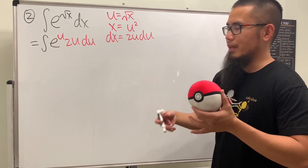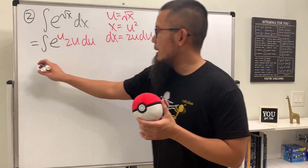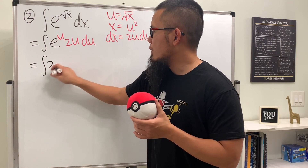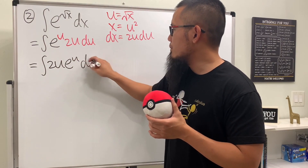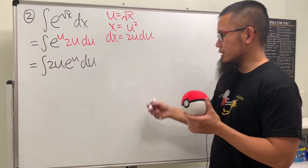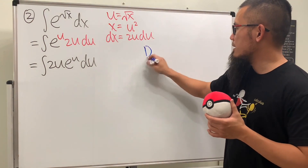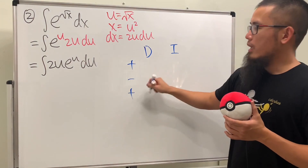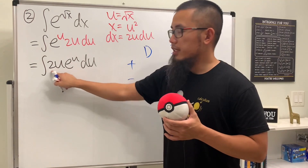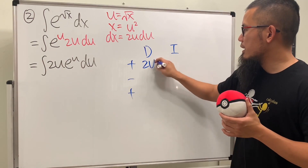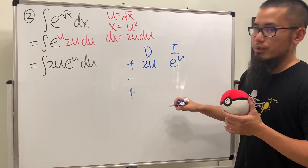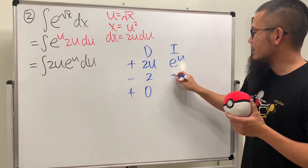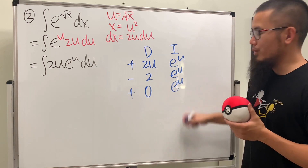We'll write this as the integral of 2u e to the u du. Let's integrate this with the DI format: d and also the i, plus, minus, plus. We'll be differentiating 2u and integrating e to the u. Do it once, do it twice — done. Here, e to the u, e to the u.